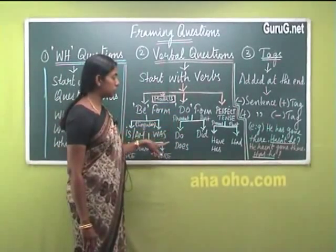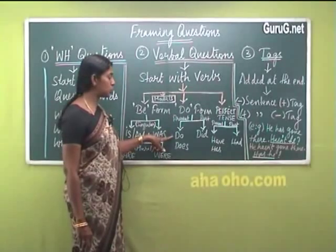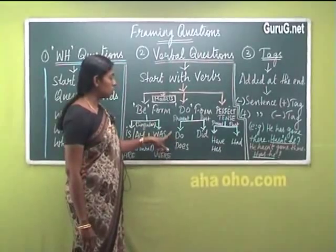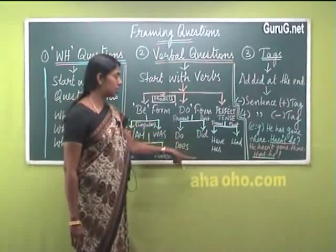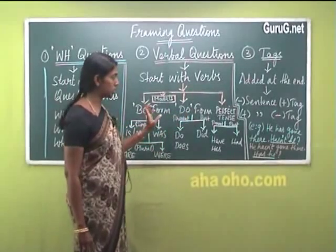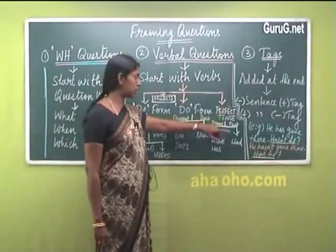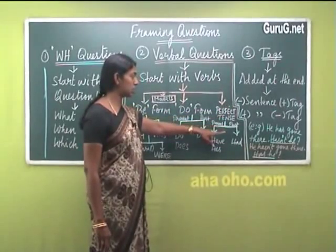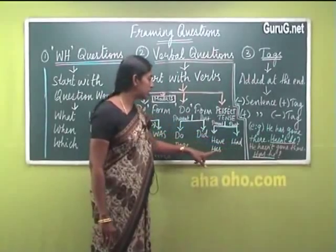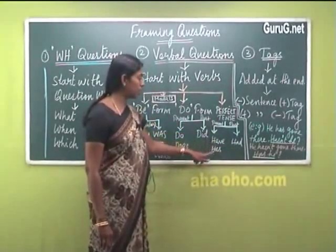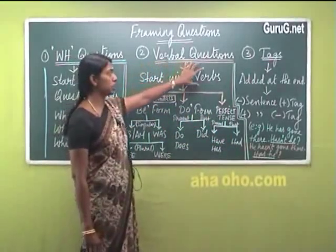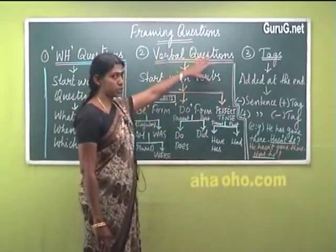Next we come to the do form of verbs. In present tense you have 'do' and 'does,' and in past tense you have 'did.' So with the help of do, does, and did — which belong to the do form of auxiliaries — we can form questions. For perfect tense auxiliaries, in present tense you have 'have' and 'has,' and in past tense you have 'had.' With have, has, and had we can also make questions. Questions that start with verbs are called verbal questions.